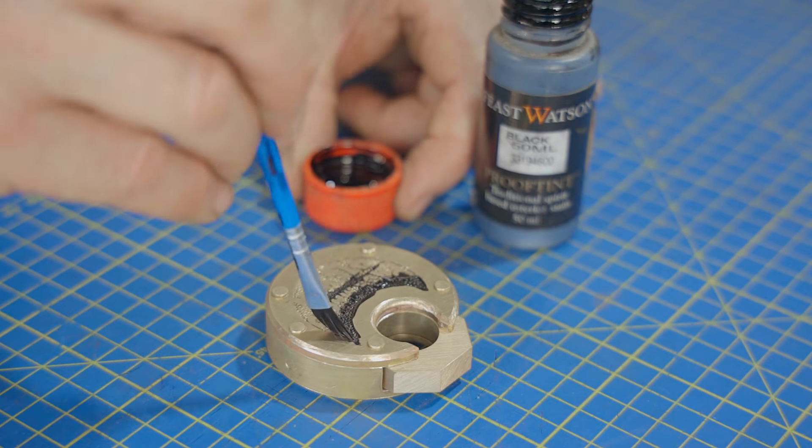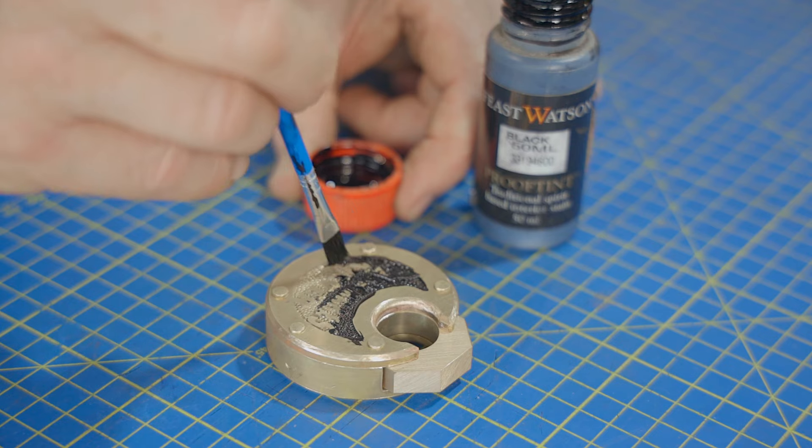Before I sand off the end of the pins I'll blacken the stipple and when it's dry I'll sand the face then.